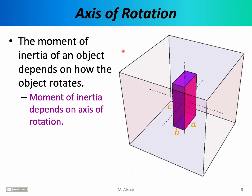To understand the importance of the axis of rotation, consider the object shown here. What we have is a rectangular prism, or a cuboid, and its length, width, and height are labeled simply as a, b, and c. Suppose we want to calculate the moment of inertia of this object. The first question we would have to ask is how is the object rotating, or how do we intend to rotate this object?